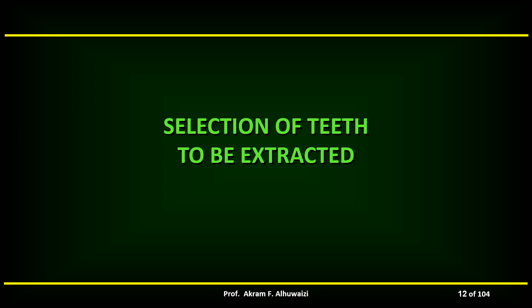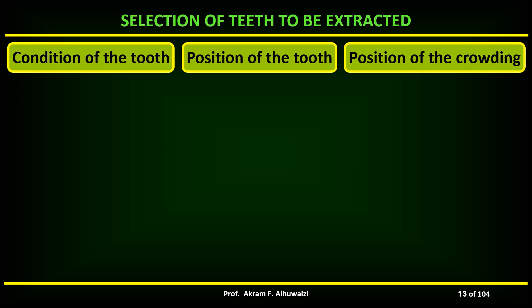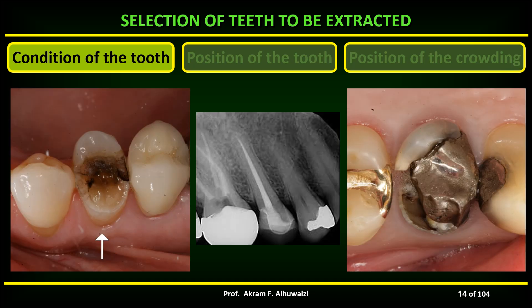The selection of the teeth to be extracted depends on the condition of the tooth, the position of the tooth, and the position of the crowding. For the condition of the tooth, fractured, hypoplastic, grossly carious teeth, root canal treated teeth, and teeth with large restorations are preferred for extraction over healthy teeth. The main consideration is the long-term prognosis of the tooth rather than the appearance.